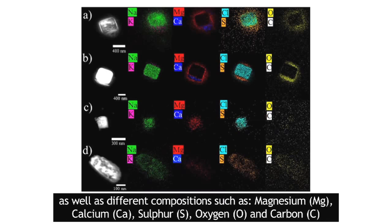They have different compositions, such as magnesium with the symbol Mg, calcium with the chemical symbol Ca, sulfur with the chemical symbol S, and oxygen and carbon with the chemical symbols O and C.